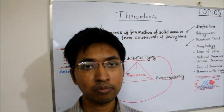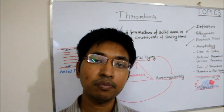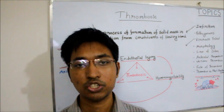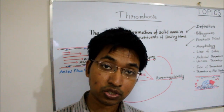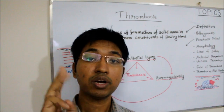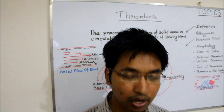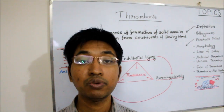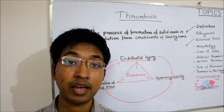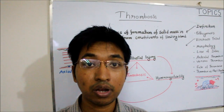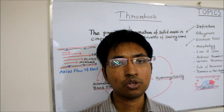The fourth fate is organization and re-canalization. Organization means there will be ingrowth of endothelial cells, fibroblasts, and smooth muscle cells inside the thrombus. Re-canalization means there will be formation of capillaries inside the thrombus, and sometimes these capillaries may re-establish blood flow, although to a variable degree. These are the four fates of thrombus.